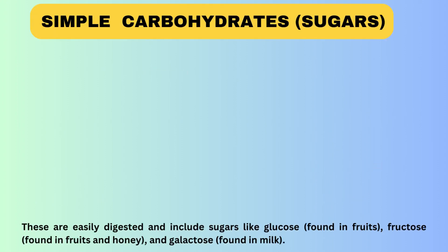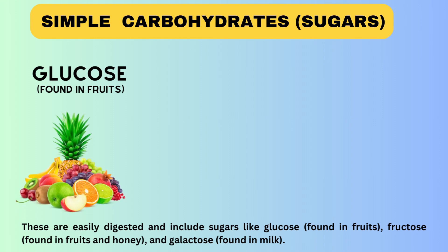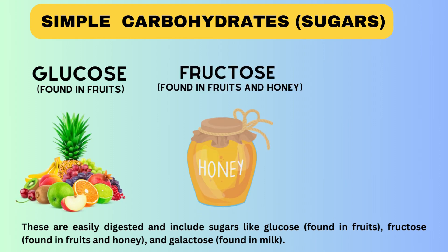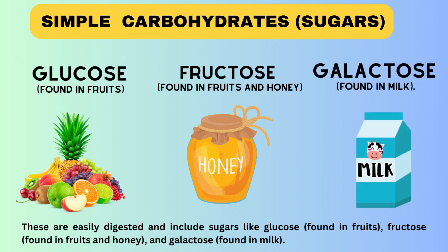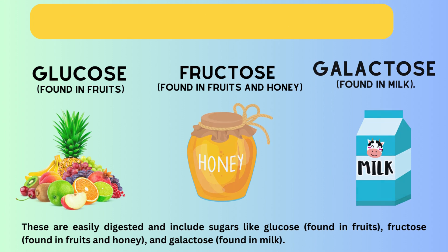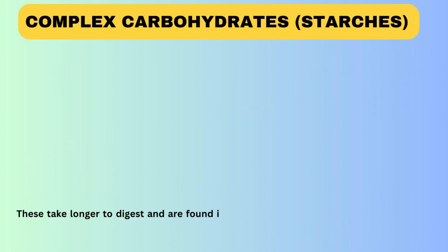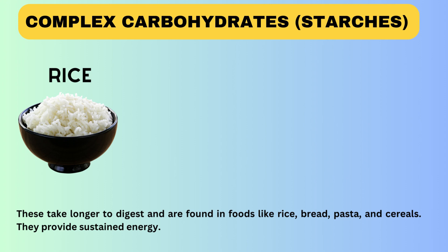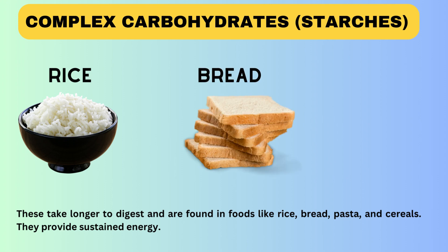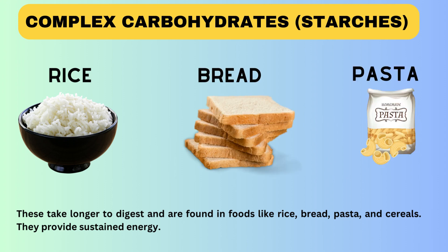Carbohydrates come in two main forms. Simple carbohydrates, that means sugars — these are easily digested and include glucose found in fruits, fructose found in fruits and honey, and galactose found in milk. The second form is complex carbohydrates, that means starches — these take longer to digest and are found in foods like rice, bread, pasta, etc. They provide sustained energy.